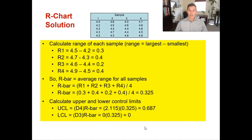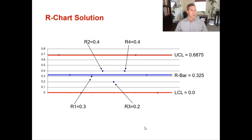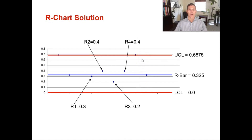Now let's plot and evaluate the R chart. The upper control limit is 0.6875, the lower control limit is 0, and R-bar is 0.325. Our four plots are 0.3, 0.4, 0.2, and 0.4 — all within the control limits, above the lower and below the upper. In terms of process dispersion, this process is in control.